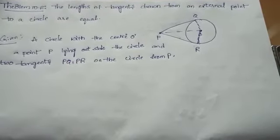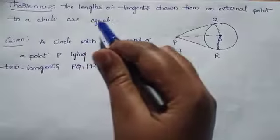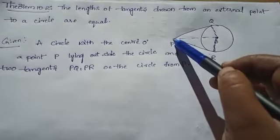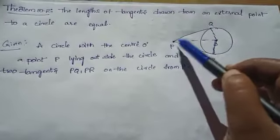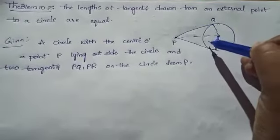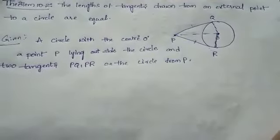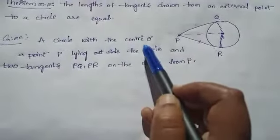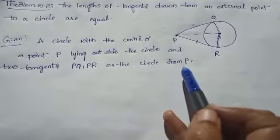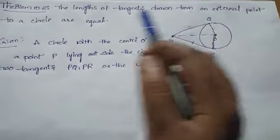Theorem number 10.2. See statement. The lengths of tangents drawn from an external point to a circle are equal. This is a circle with center O. Point P lying outside the circle. Two tangents PQ and PR are drawn on the circle from P. Given: a circle with center O, a point P lying outside the circle, and two tangents PQ and PR from P.